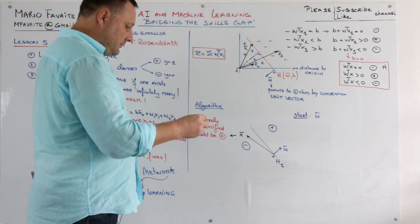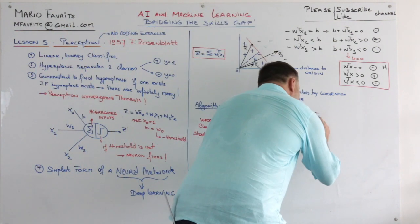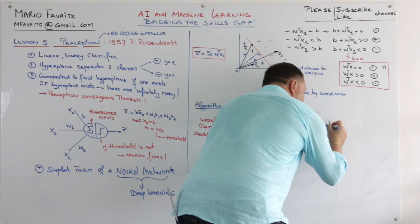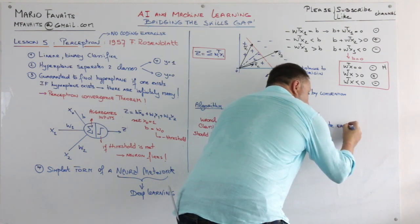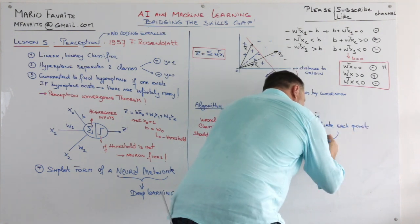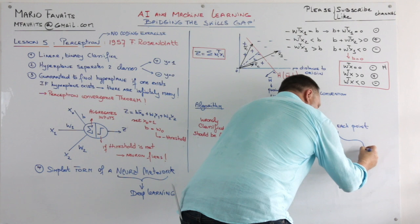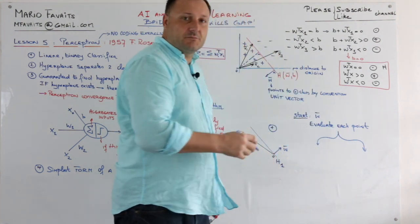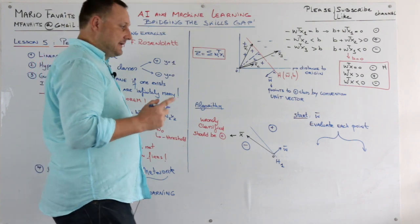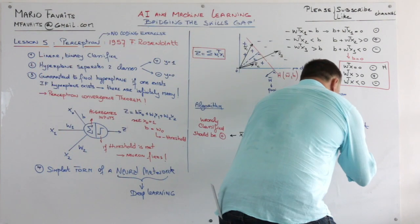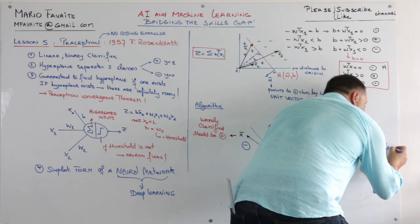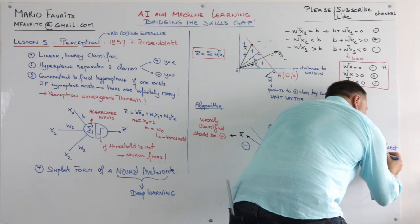Now what we're going to do is we're going to evaluate each point. And then we have two options. Actually we have three options. If it's correctly classified you don't do anything. So there's three options. If correct, move to the next point.